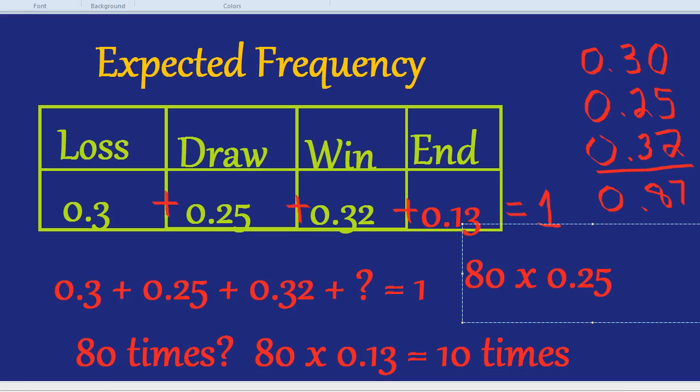Now, without a calculator, we still know that 0.25 means a quarter, or 25% chance. A quarter of 80 is 20, so we would expect to draw 20 times.